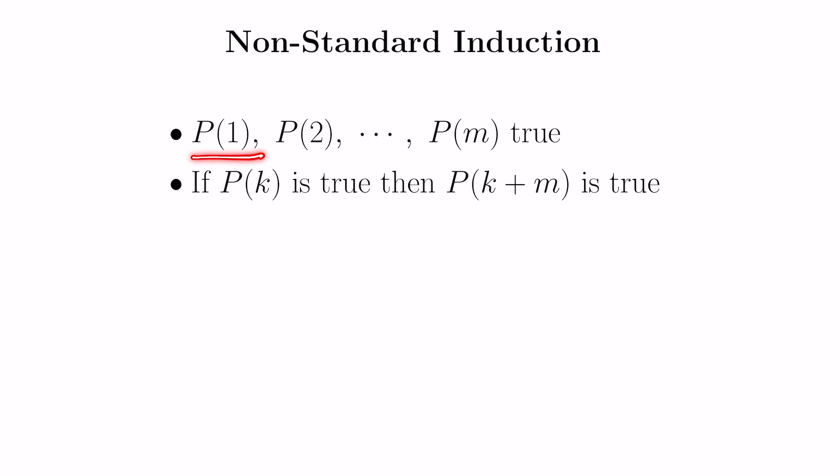Unlike standard induction, we're going to assume that the first m statements are true for some positive integer m. And then suppose you also knew that if the kth statement was true, then the k plus mth statement is true as well. If these two things are the case, then all of your statements are true.